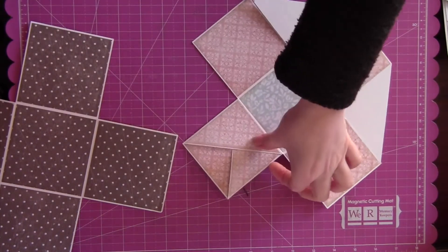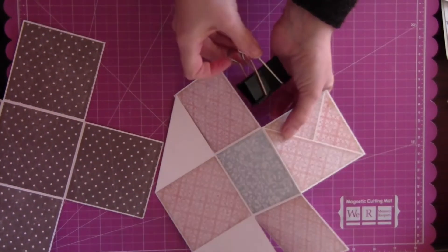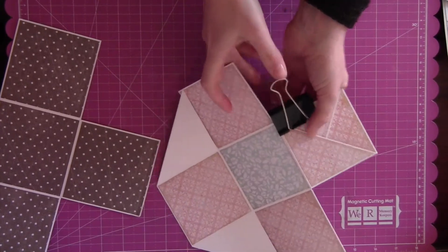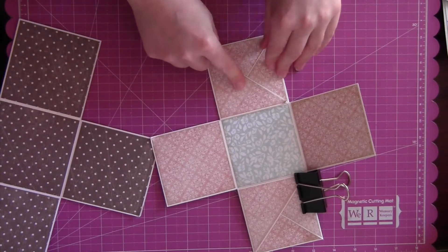You just want to glue the part of the pocket where it's going to overlap with the other one. I will just hold it in place with a bulldog clip while that's drying. Then I'm going to repeat that on the other side of the box as well.